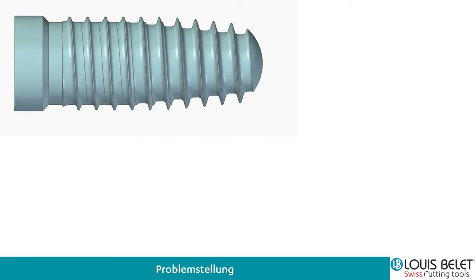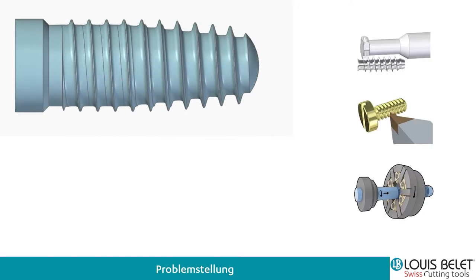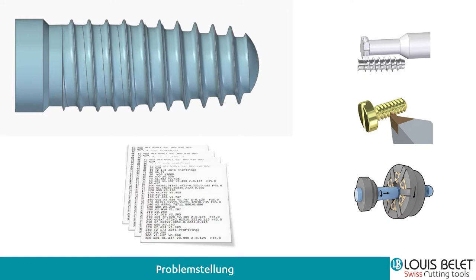Um solche Gewinde herzustellen, kennt man schon einige Verfahren, wie zum Beispiel das Gewindewirbeln mit einem Formgewindewirbler oder klassisch das Strählen mit einer Strähplatte, einer Wendeplatte oder auch mit speziellen Werkzeugen – hier eine Lösung von Utilis, welche wir oft in der Medizinaltechnik antreffen. Jedoch braucht es für all diese Lösungen oftmals sehr viel Programmieraufwand, vor allem wenn man einen Konus und einen Zylinder hat.